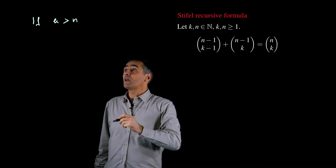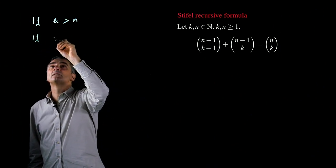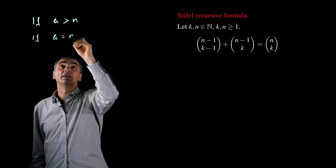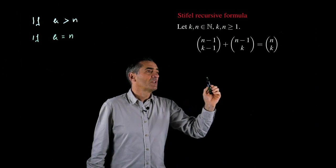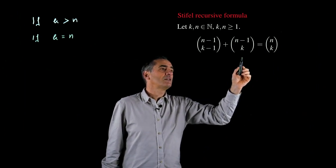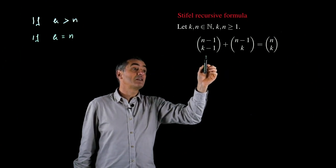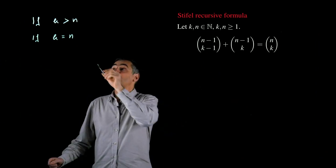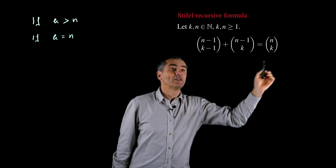And then, if k now is equal to n, what you get? Look, here you have 1, here you have 0, and here you have 1 again. Therefore, also in this case, you have that this equality holds.